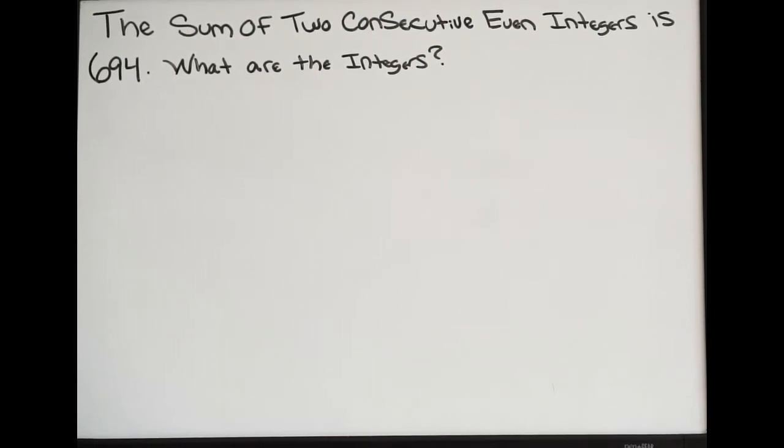Okay, so in this example it says the sum of two consecutive even integers is 694. What are the integers? So in order to do this problem you're going to have to set up an equation. But before we do that we want to come up with a couple of expressions to illustrate what's going on here.